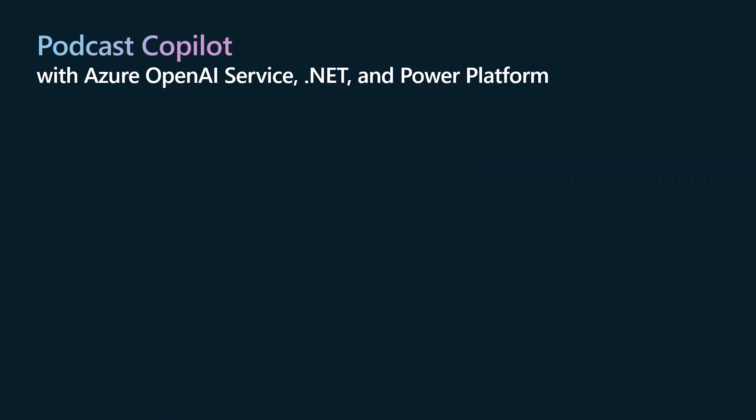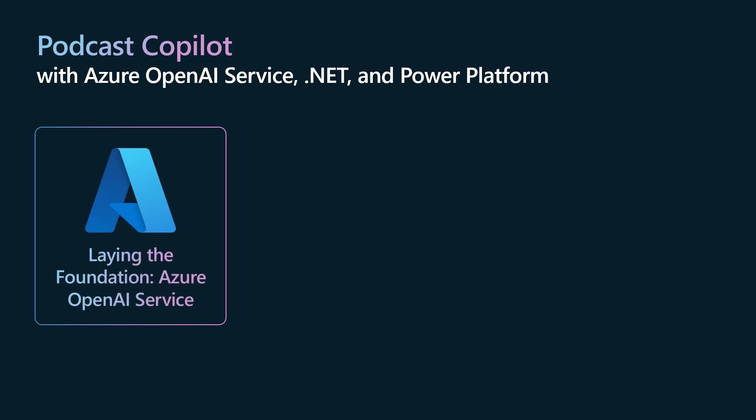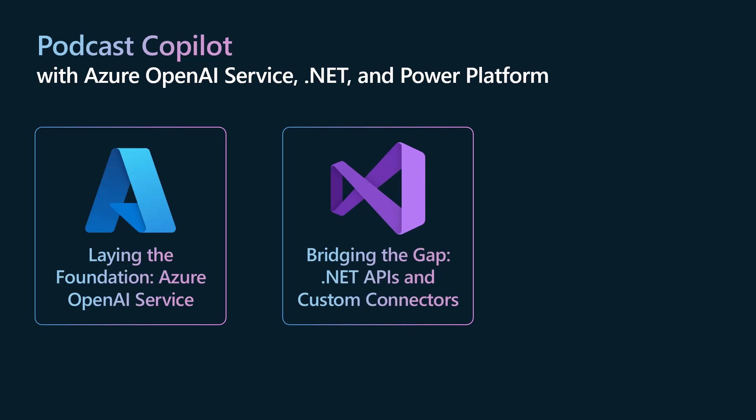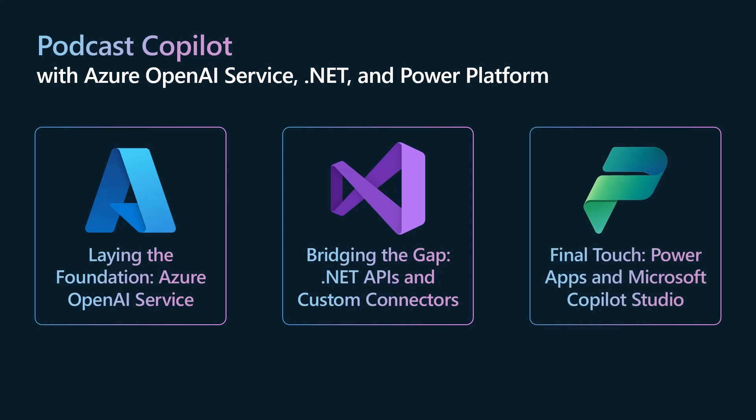Let's take a look at what we'll be covering throughout this series. In this video, we'll be laying the foundation by diving into the world of Azure OpenAI Service — introducing the service, describing the models, and guiding you through creating deployments. In the next video, we'll bridge the gap by creating a .NET API using the .NET Azure OpenAI SDK and a custom connector from within Visual Studio. Finally, we'll bring it all together with Power Apps and Copilot Studio.